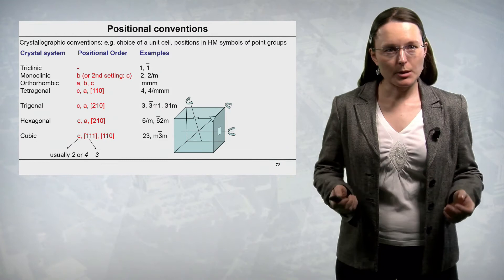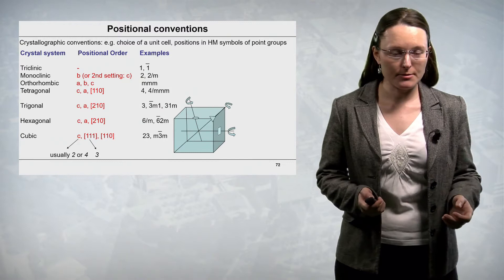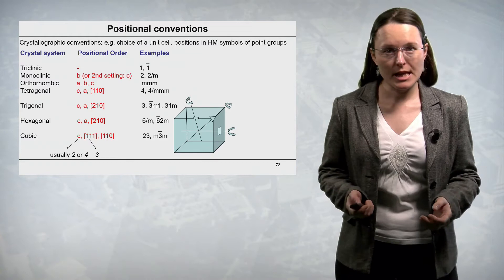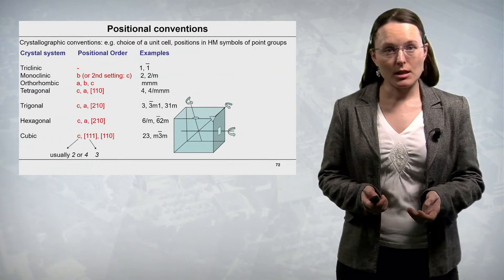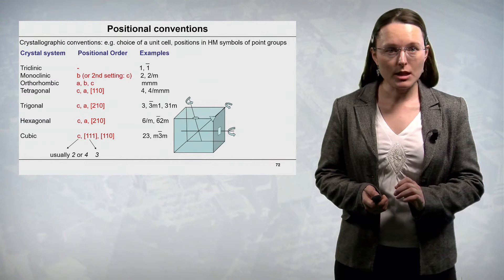We learned about different crystallographic conventions, for instance on the choice of a unit cell. There are also crystallographic conventions which govern the positions in the Hermann-Mauguin symbols of point groups. In the triclinic crystal system, with no symmetry or just an inversion symmetry center, we have no conventions on positional order.